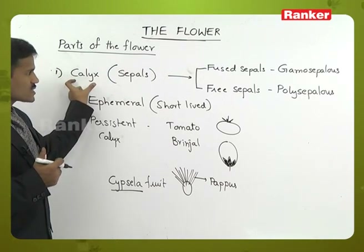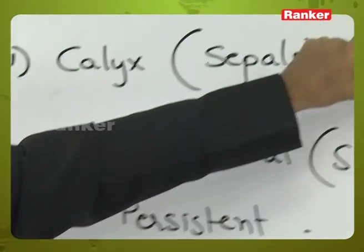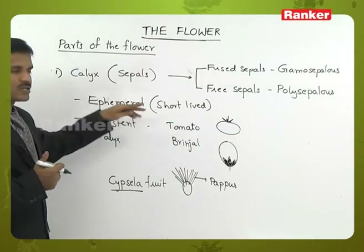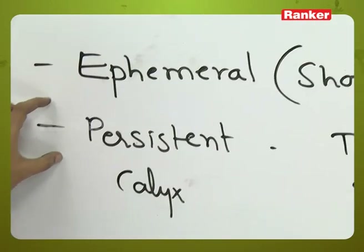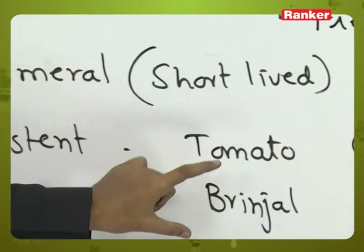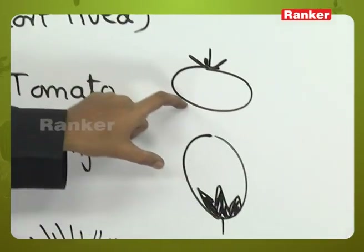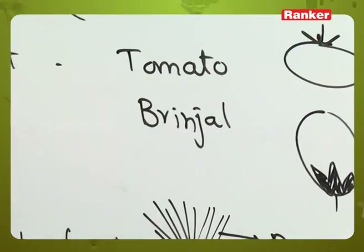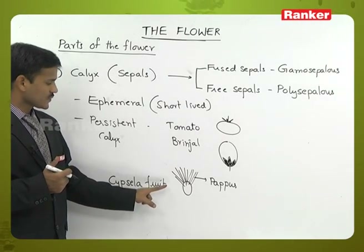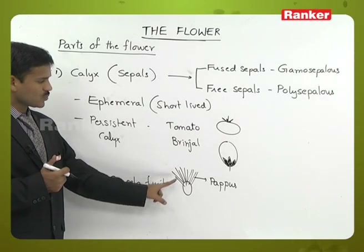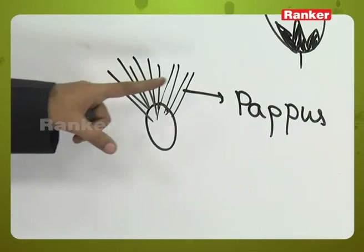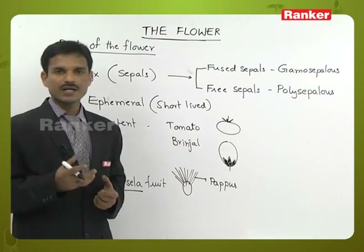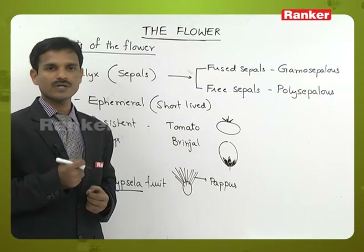So calyx can be gamosepalous — fused condition — or polysepalous — free sepals. Sepals are generally ephemeral, meaning short-lived, but in some plants they are persistent, developing and remaining attached to the fruit, as seen in tomato and brinjal. In cypsela fruits, pappus — which is a modified persistent calyx — is present and helps in the dispersal of fruits.